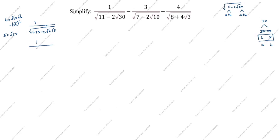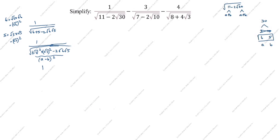So we write: root of (root 6 whole square plus root 5 whole square minus 2 root 6 root 5). This matches the formula (a minus b)², where a is root 6 and b is root 5. Cancelling square and root, the result is 1 divided by (root 6 minus root 5).